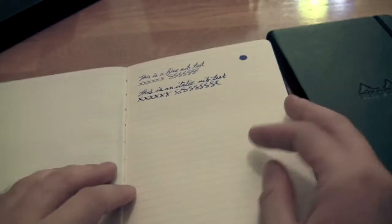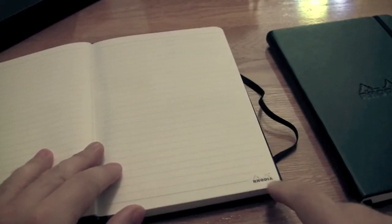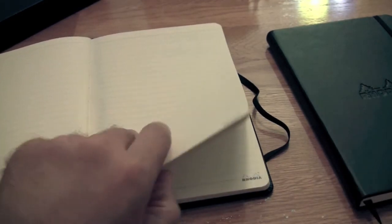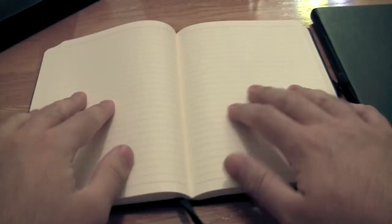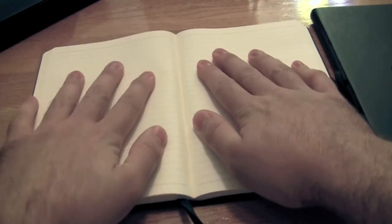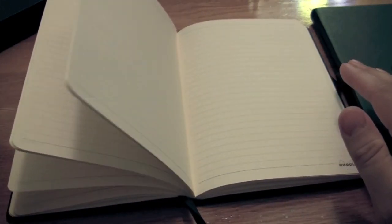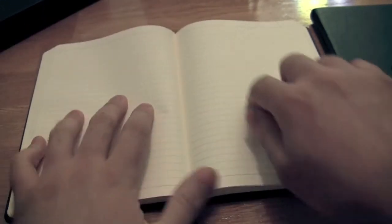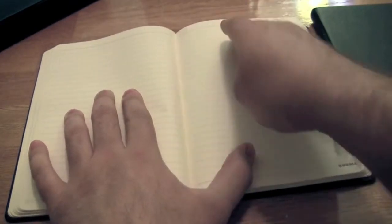The biggest difference is obviously this is lined. And it's got the Rhodia logos on the bottom of each page which some people like, some people don't. And when you have it open like this, it doesn't lay flat as well as some people would like. The pages tend to want to bow up and it leaves that little indention there like you have when you open a book.